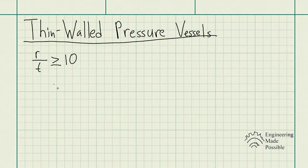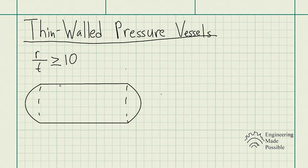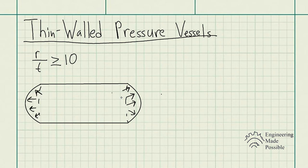For a thin-walled pressure vessel, the stress distribution across the thickness of the wall is uniform. So if we have a cylindrical pressure vessel at some pressure level, the pressure is distributed along the wall on either side. Taking a cross-section, we can see that an axial stress is developed along that thin wall.